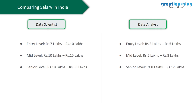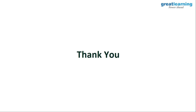Let's also look at salary trends in India. For a data scientist, entry level is around 7 to 10 lakhs; mid level is 10 to 15 lakhs; and at senior level, a wide range of 18 to 30 lakhs. For a data analyst, entry level is 3 to 5 lakhs, mostly doing basic exploratory data analysis; mid level is 5 to 8 lakhs; and at senior level, around 8 to 12 lakhs per annum.